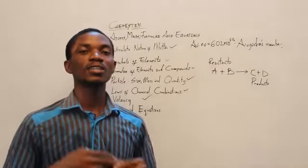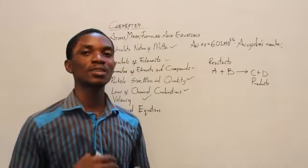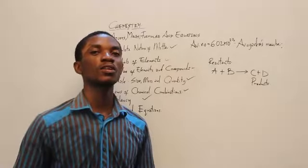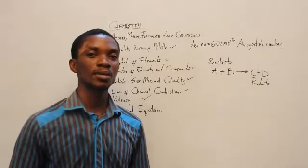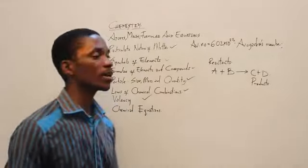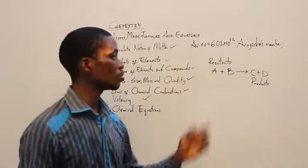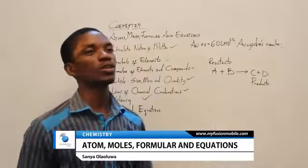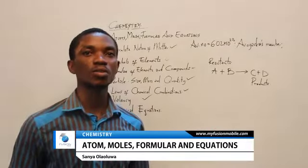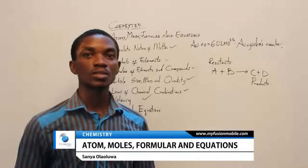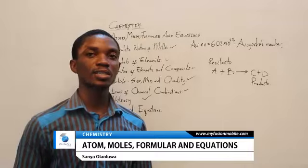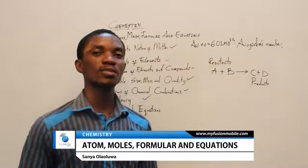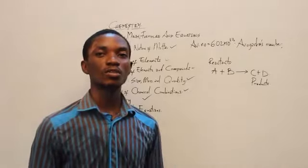We then discussed valency as a representation of the number of electrons in the outermost shell of a particular element. We also discussed chemical equations, looking at products and reactants. If there is any need for catalysts to hasten the chemical reaction, we'll be discussing that in more detail in future topics.